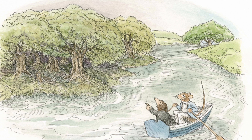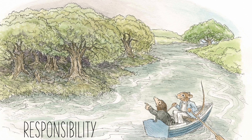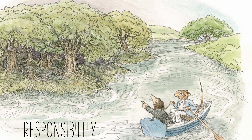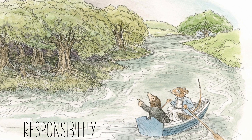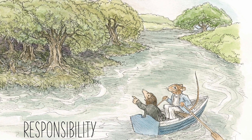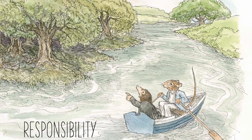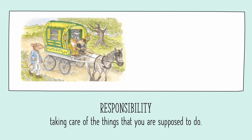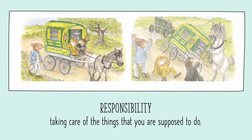Responsibility is another theme that we see portrayed in this story. A responsible person is someone who takes care of the things that they are supposed to. A responsible person does good work and can be trusted and depended on to do the right things. Rat and Mole both consistently portrayed this theme throughout the story. For example, Water Rat and Mole take care of all of the work on the trip that Toad had planned. Rat and Mole also took care of the wrecked caravan, the horse, and Toad after the car incident.